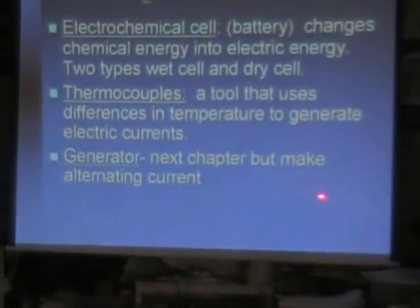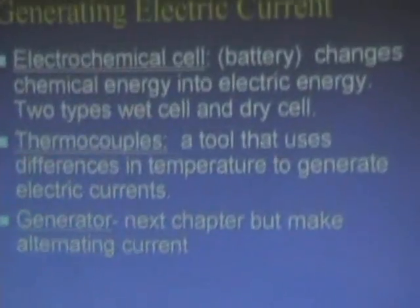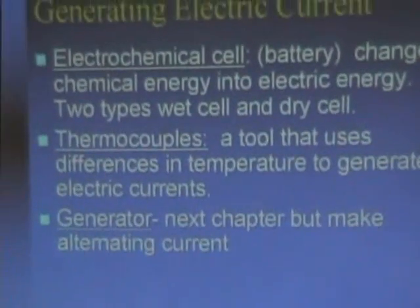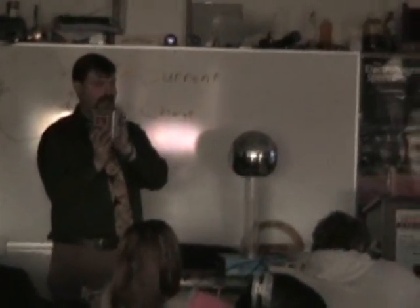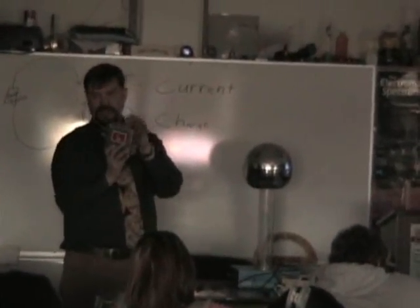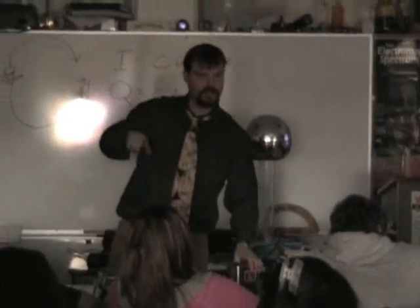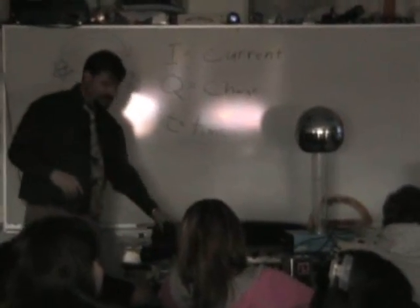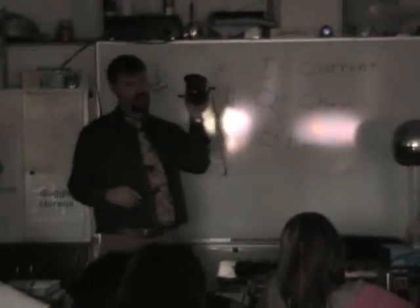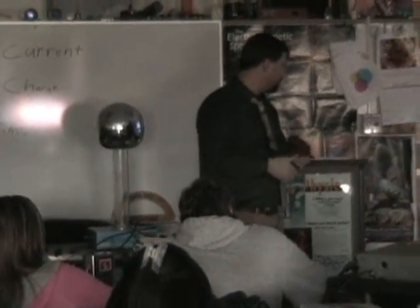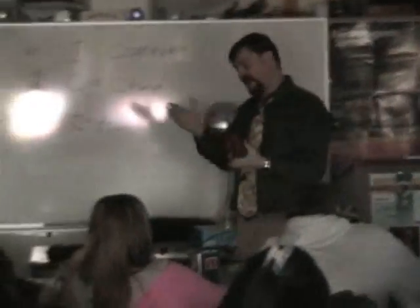And then we have the generator. Generators make alternating currents. Batteries have direct current, because the charge in the chemicals flows from one side to the other side of a battery, so we have a positive and a negative side. When you connect the two, electrons flow in this loop. A generator — power stations all use generators. They use magnetic fields to generate electric fields to move electrons back and forth.